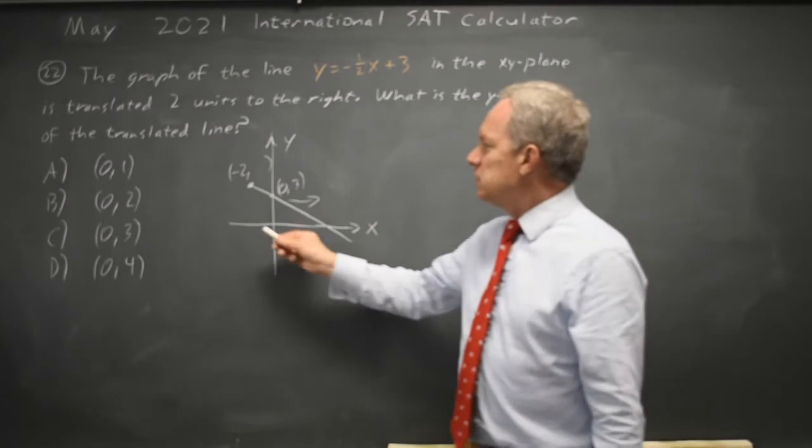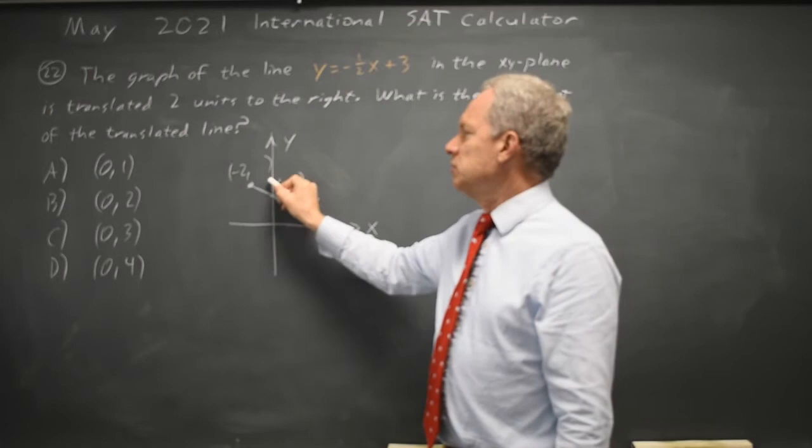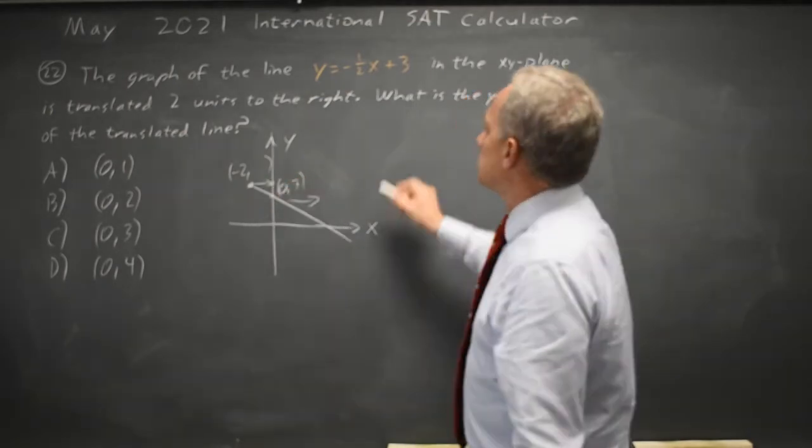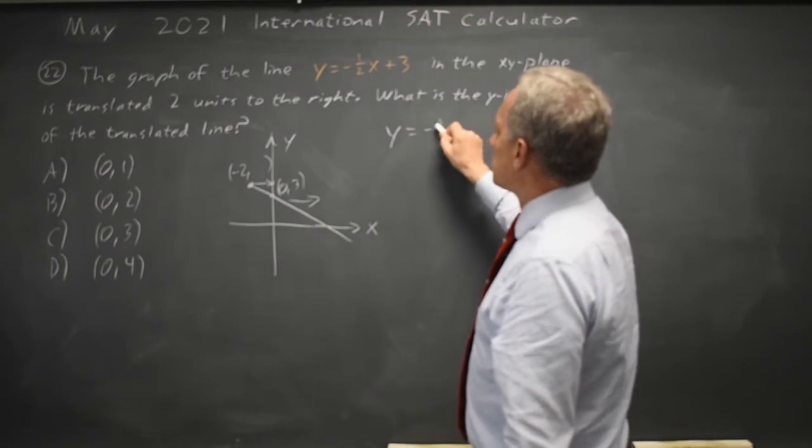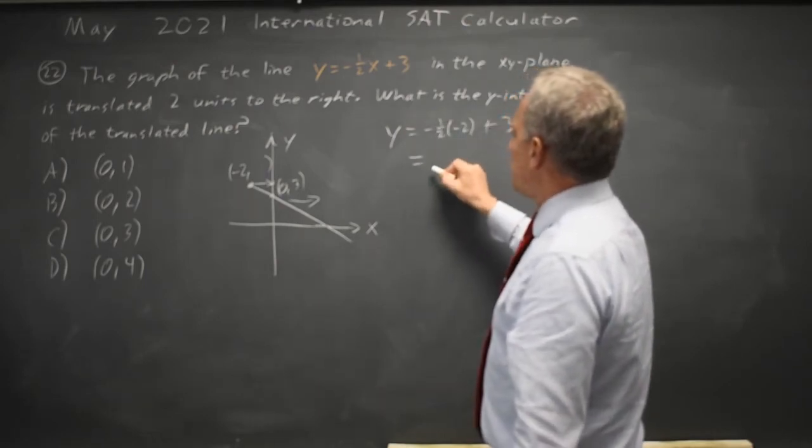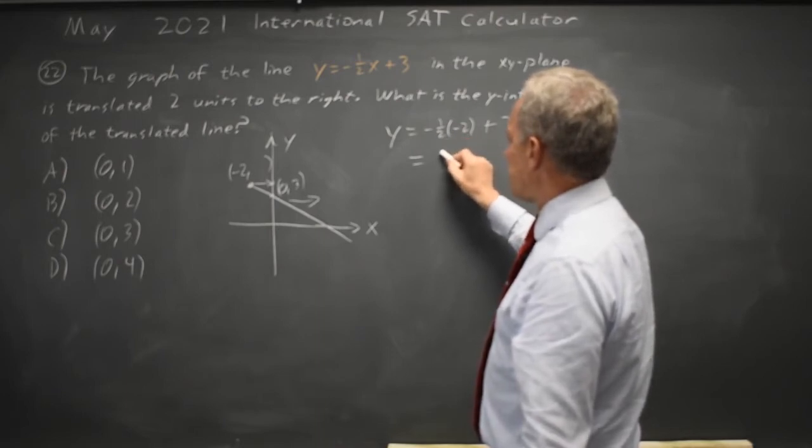Because when we translate this graph to the right by 2, the point at x equals negative 2 will move to x equals 0. So y equals negative 1 half times negative 2 plus 3, and negative 1 half times negative 2, negative times negative is positive, half of 2 is 1.